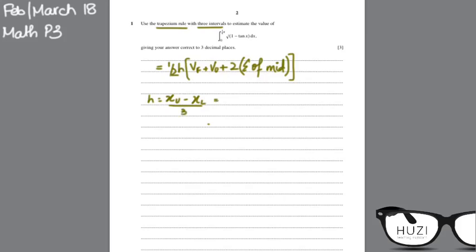Your upper limit is π/4 minus 0 upon 3, so your height is π/12.